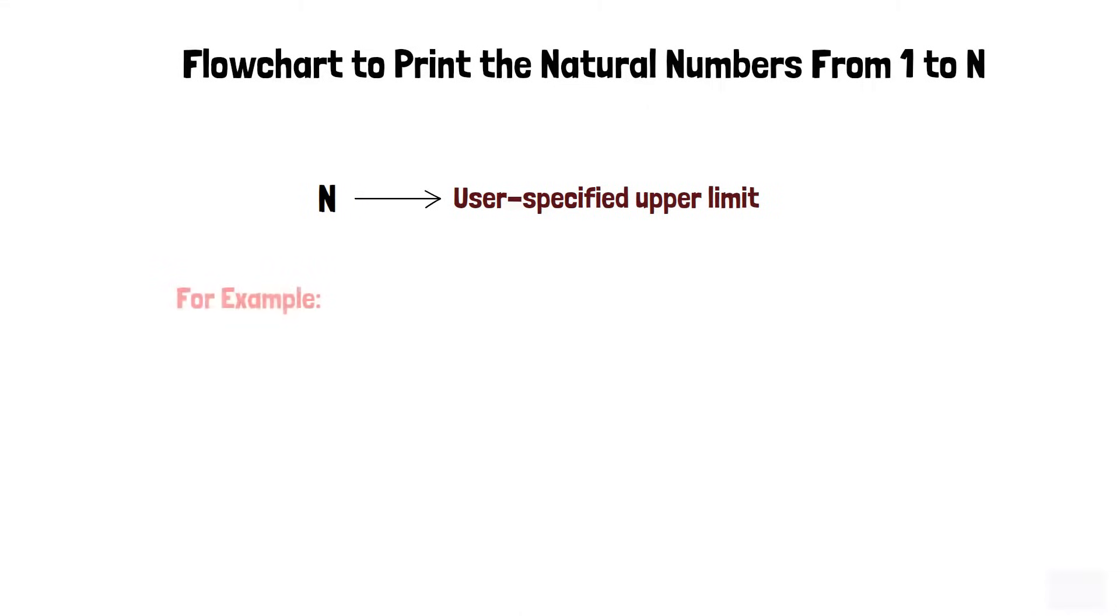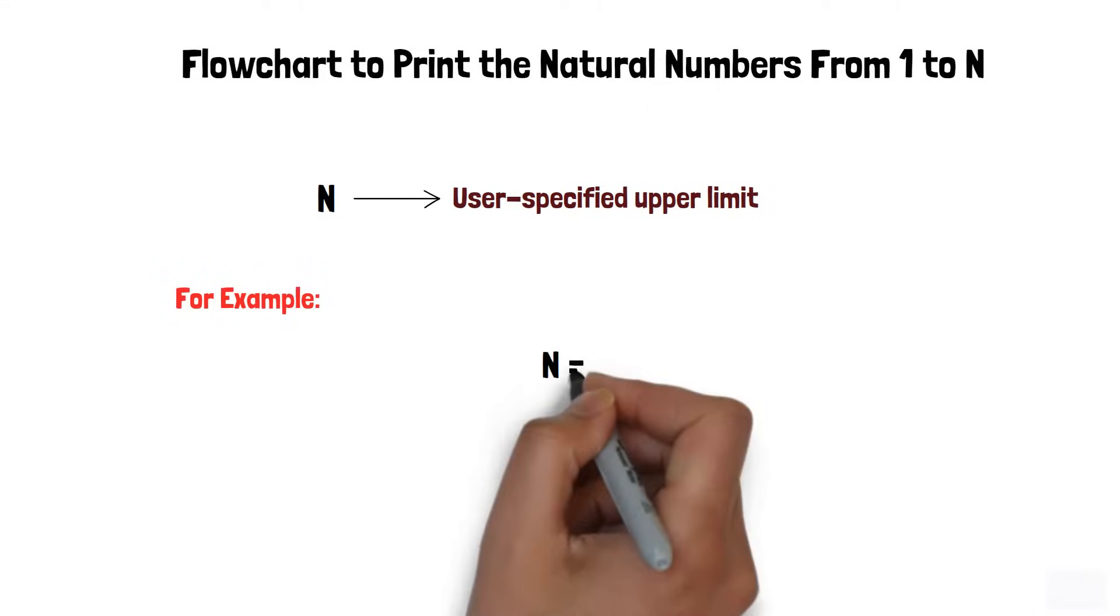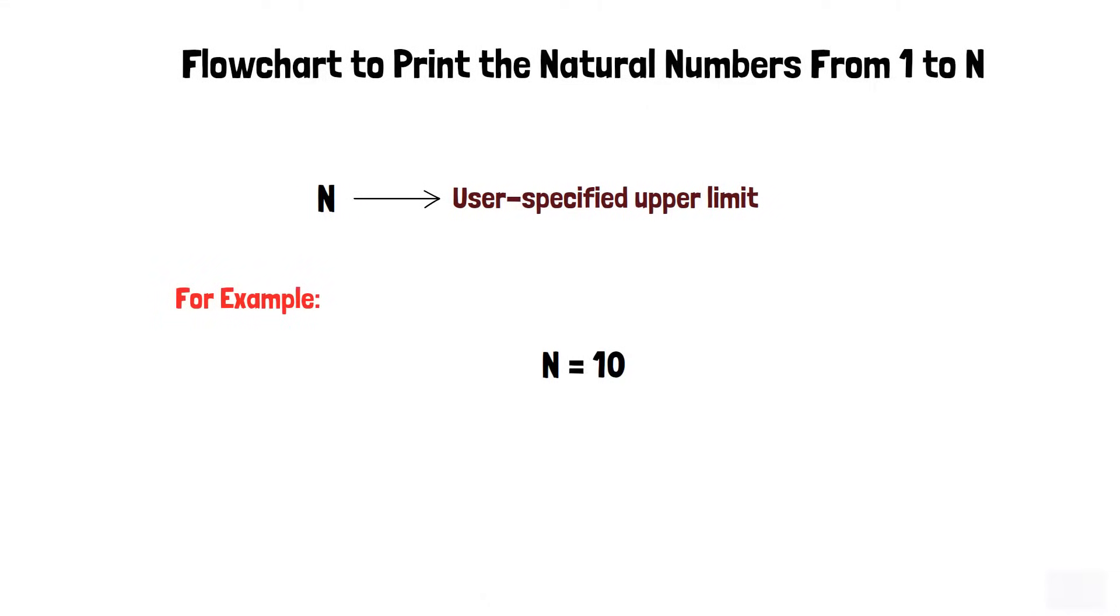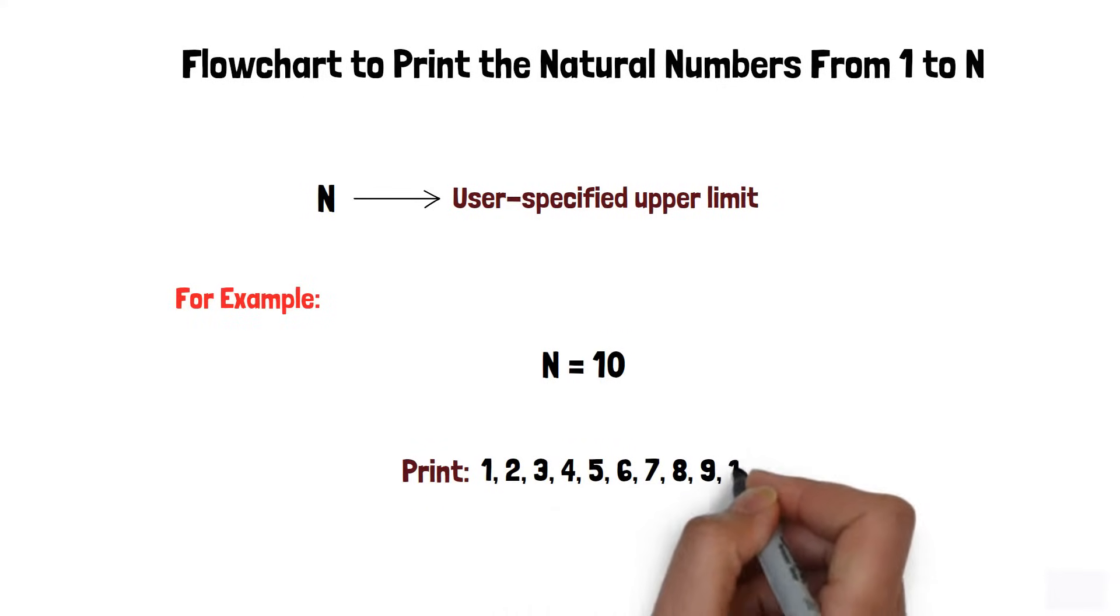For example, if n equals 10, then our program should print the numbers from 1 to 10, that is 1, 2, 3, 4, 5, 6, 7, 8, 9, and 10.